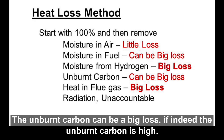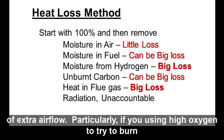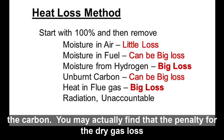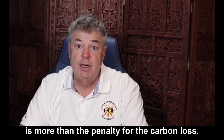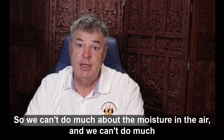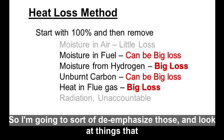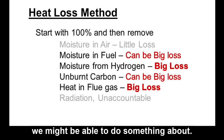The unburnt carbon can be a big loss if it is high. The dry gas loss can be high if you're using a lot of extra airflow — particularly high oxygen to try to burn the carbon. You may actually find the penalty for dry gas loss is greater than the penalty for carbon loss. We can't do much about moisture in the air, or radiation and unaccounted-for losses, so we focus on the three things we can control.